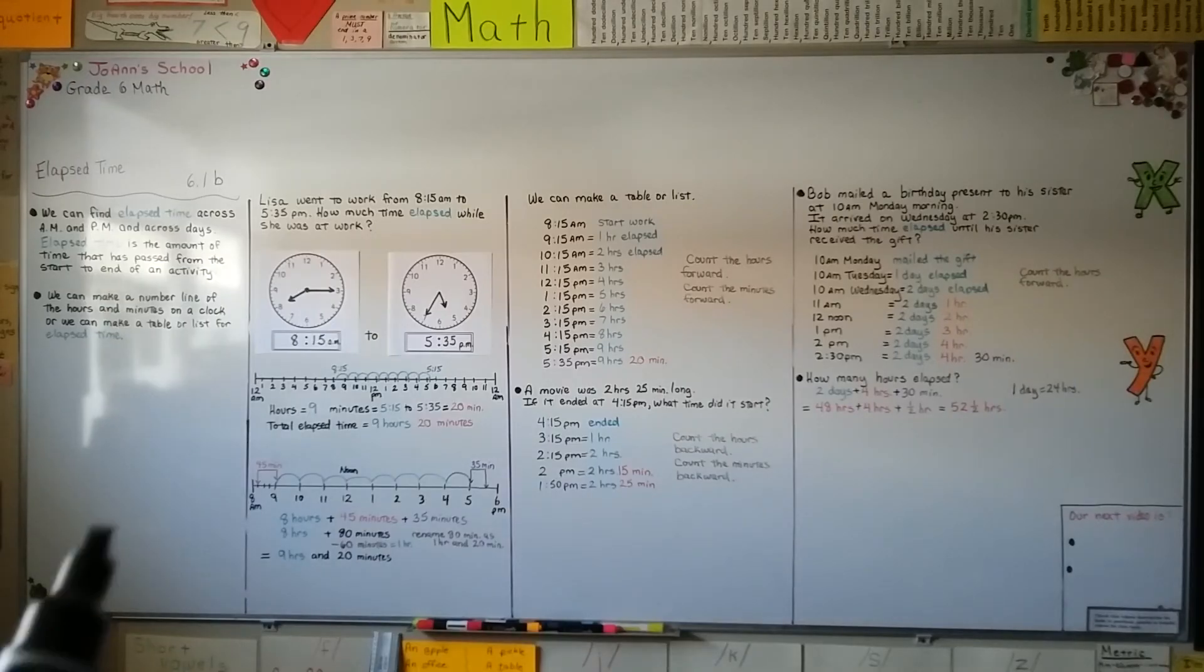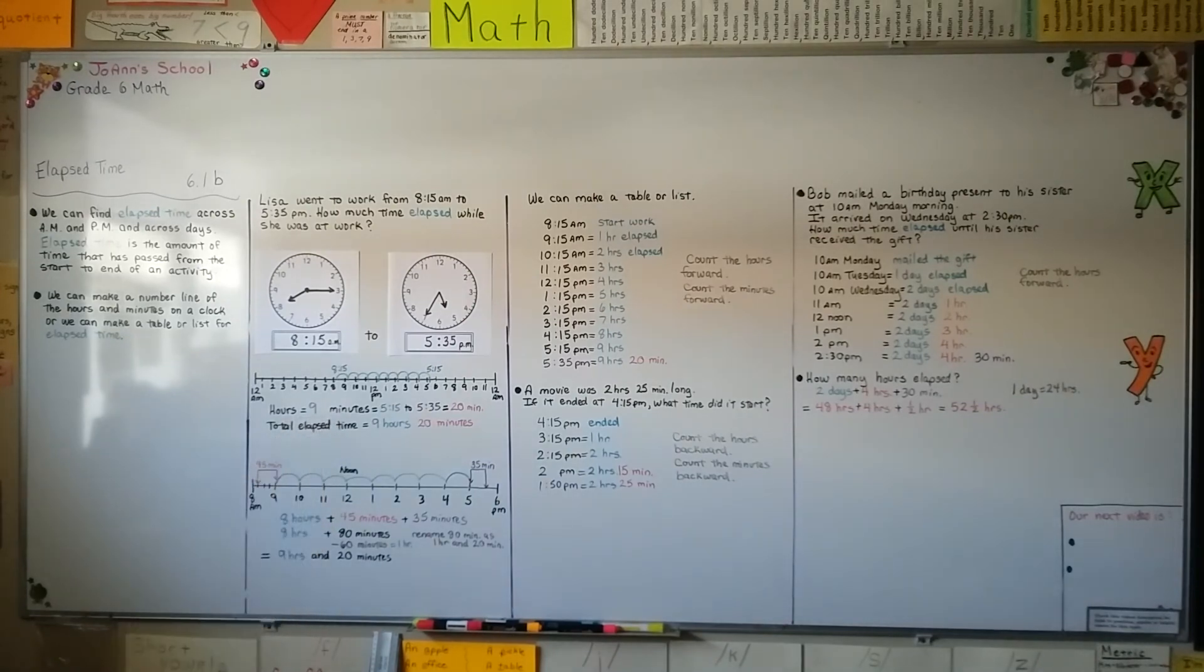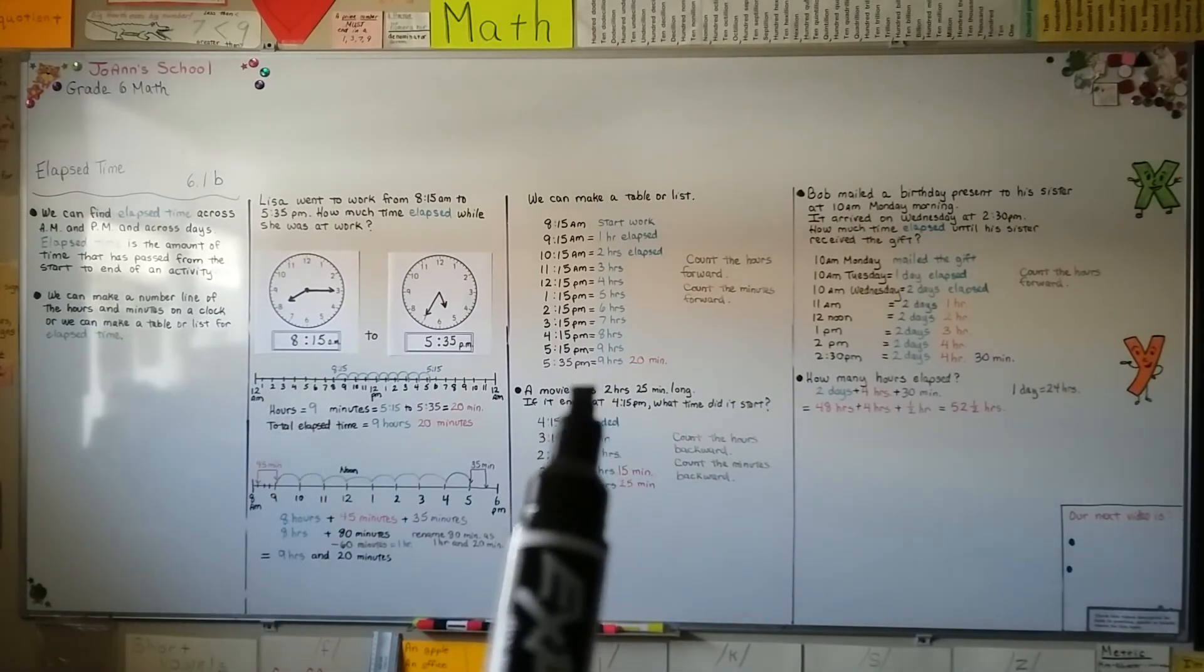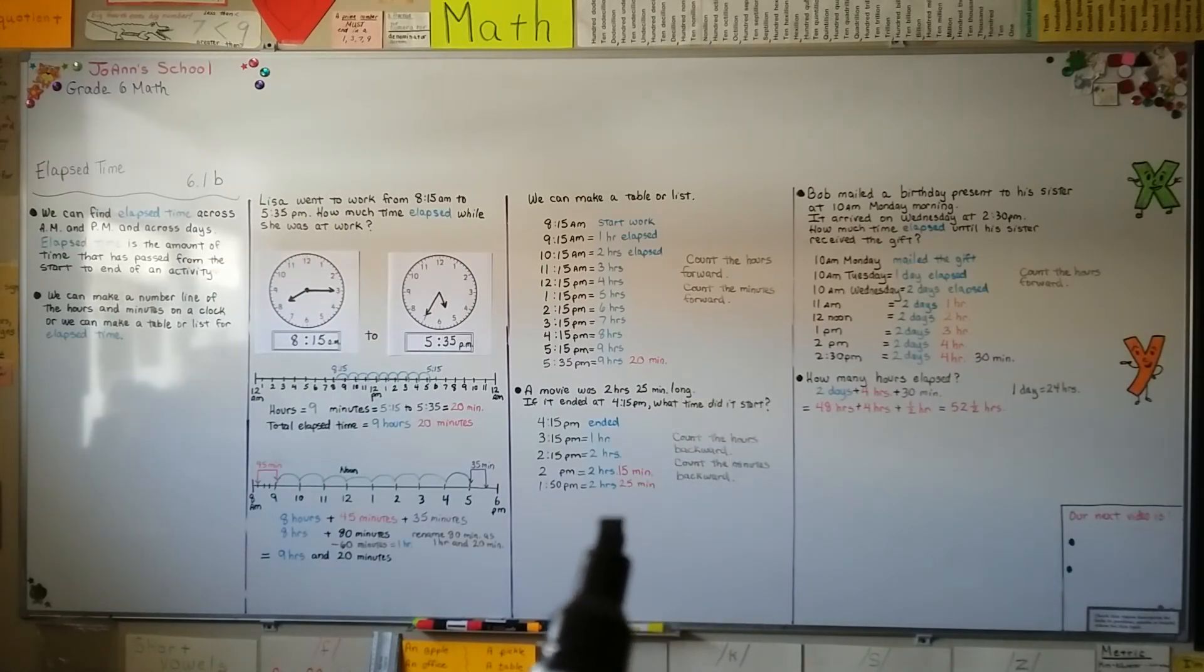So we can make a number line for the clock to find elapsed time. We can make a table or list and count the hours and minutes forward or count them backward. Either way. I hope you have a great day and I'll see you next time. Bye.